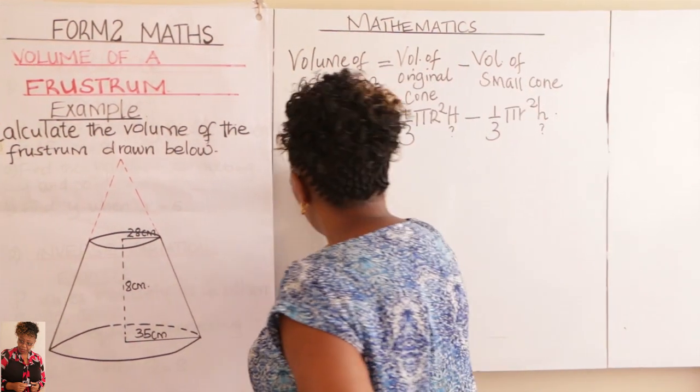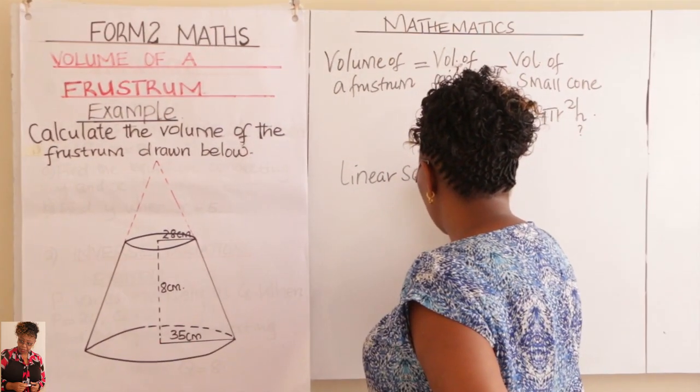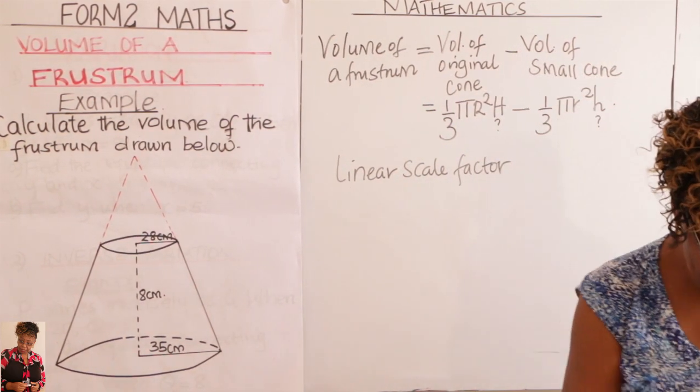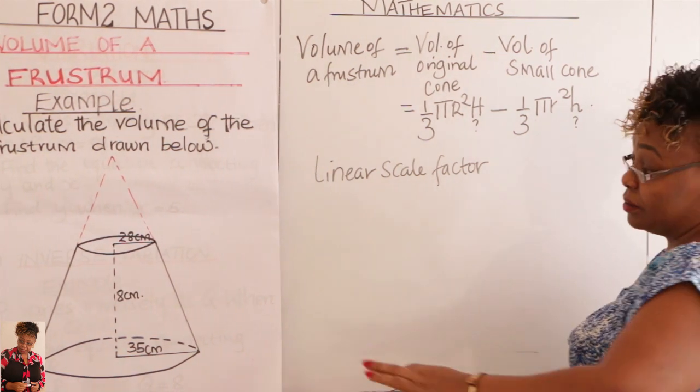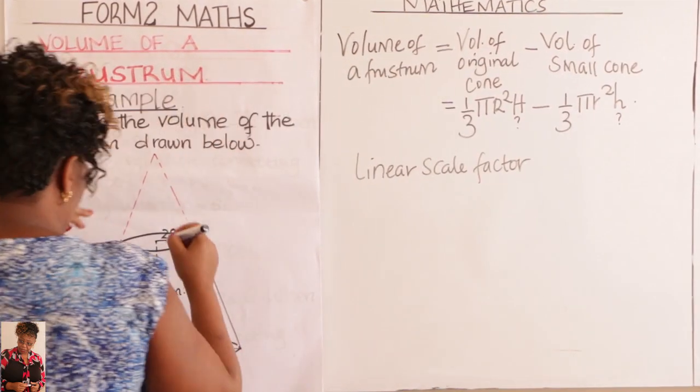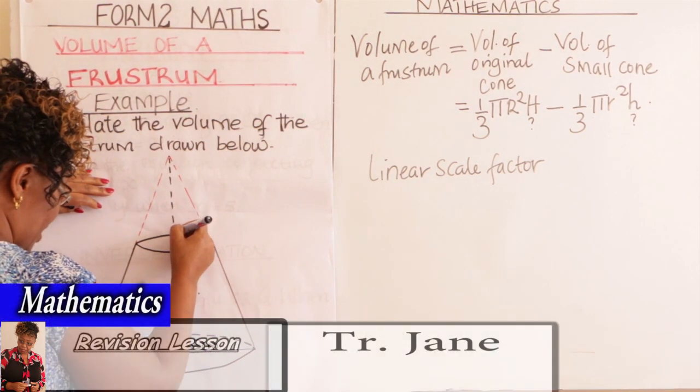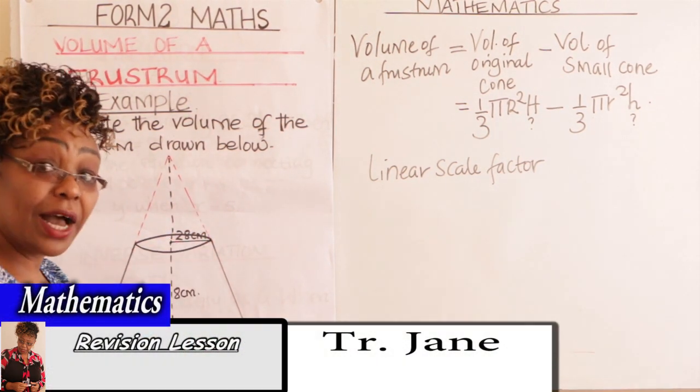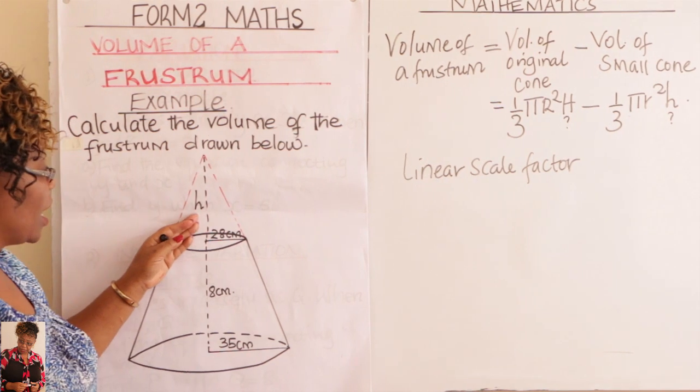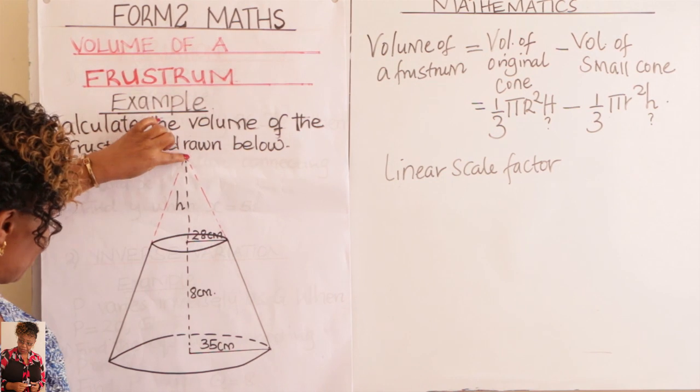So again learner, you now use linear scale factor to get h. Linear scale factor. You use linear scale factor, similar triangles that is. So you come here and you introduce your height, the small height. Come here and introduce your small height. Call it small h there.